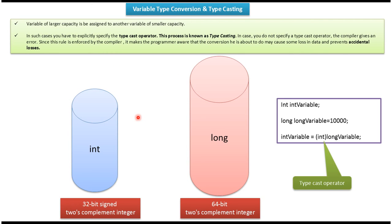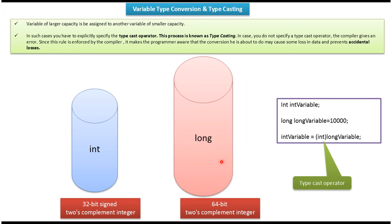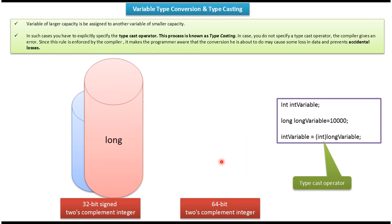Now we will see what is typecasting. Here you can see int — int is 32 bit. Here you can see long — long is 64 bit. Typecasting is nothing but assigning a bigger capacity variable to a smaller capacity variable.